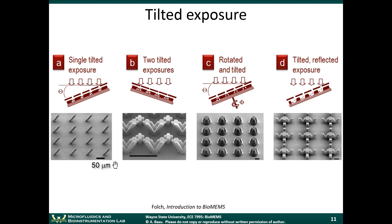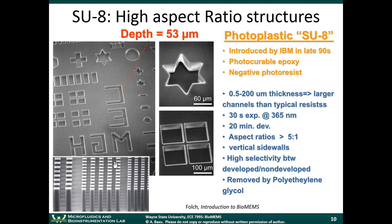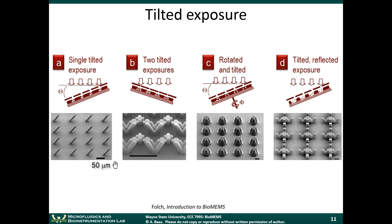Here are some tricks you can play with photolithography. Typically you expose light from above, but you can do tilted exposures to get tilted structures. With two tilted exposures you can get V-shaped structures. If you rotate the device while UV light is coming in, you can get cone-shaped structures. If you tilt the system and have a reflective coating on the bottom that reflects light back up, you can make even more unusual structures. The basic idea is that the regions exposed to light become insoluble in the resist — however you direct the light, you get the corresponding structure.